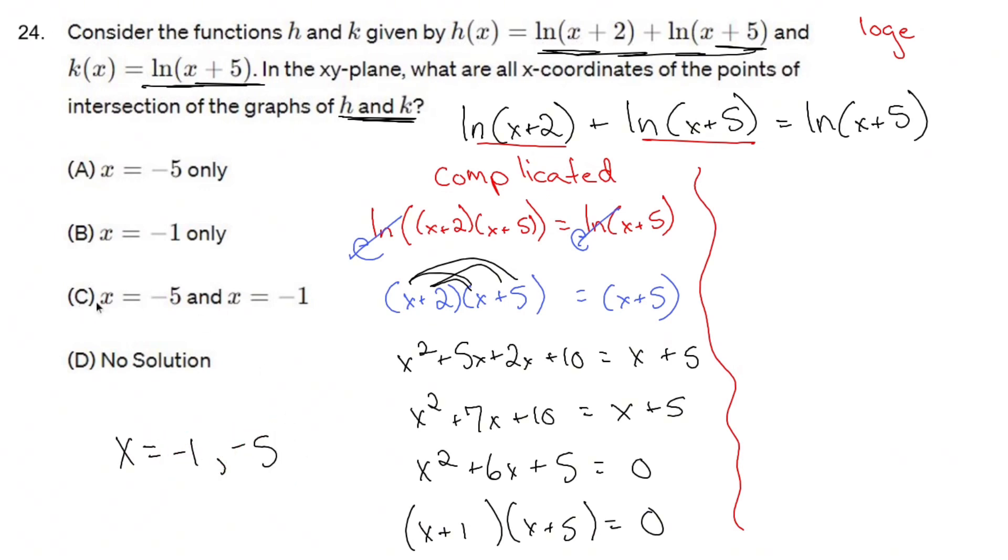Before we come up here and circle C, ln is tricky because you're never allowed to have an ln of 0, and you're never allowed to have an ln of a negative number. If I were to take negative 5 and go up here and plug that into the very first ln that I see, I would get ln of negative 5 plus 2 is negative 3.